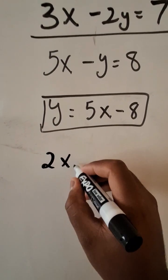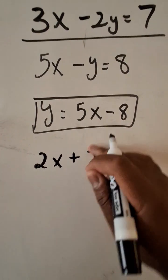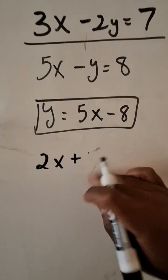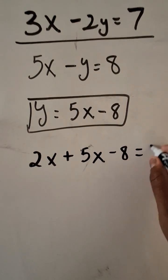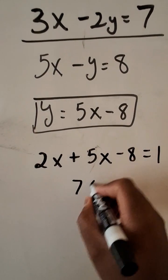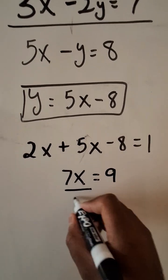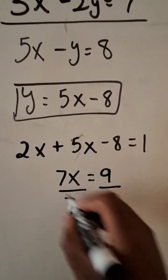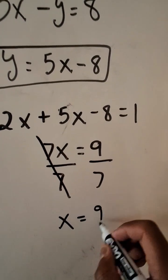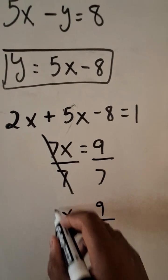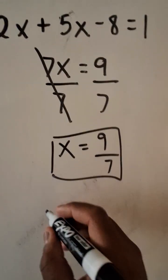And now we will substitute it into the first equation to solve for x. So we have 2x plus 5x minus 8 is equal to 1. We have 7x on the left-hand side and positive 9 on the right-hand side. We divide by 7 on both sides of the equation, and so x is equal to 9 over 7. We square that, and that's our x value.